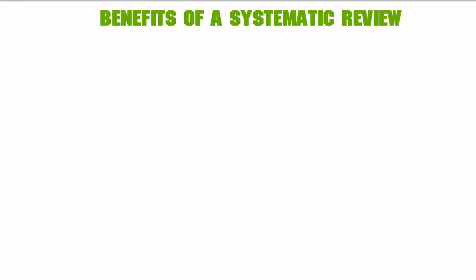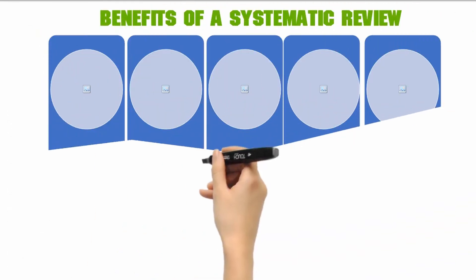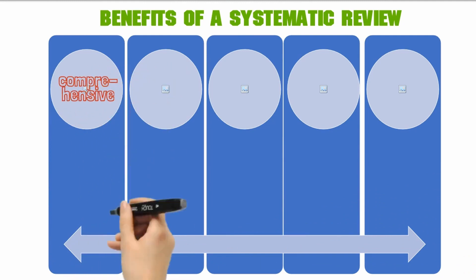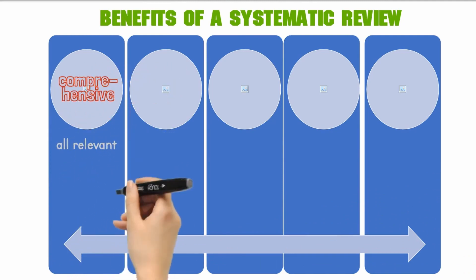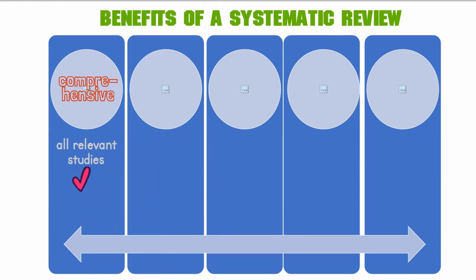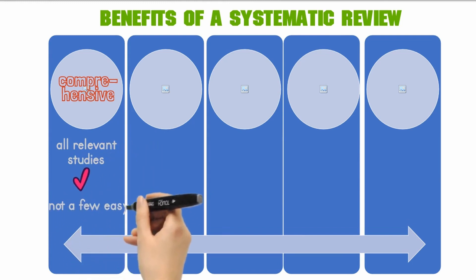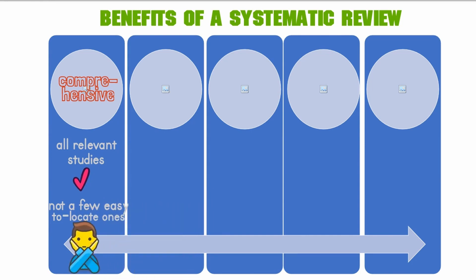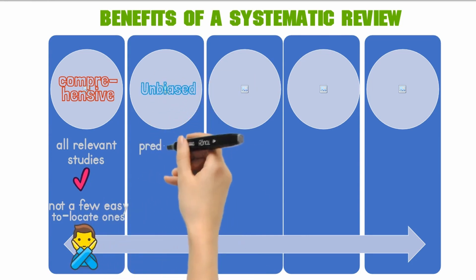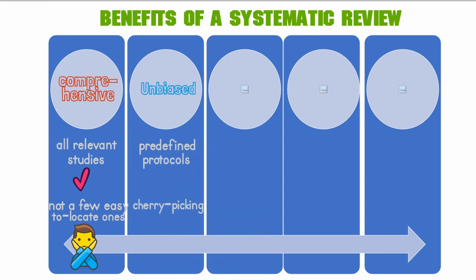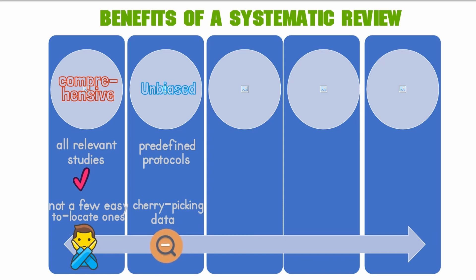Here are some key benefits of a systematic review. First, it is comprehensive — it captures all relevant studies to fully understand the current state of the research topic, finding not just a few easy-to-locate ones but all relevant studies to give a complete picture. Second, it is unbiased — the predefined protocols reduce the likelihood of cherry-picking data to fit a narrative, following the evidence objectively.